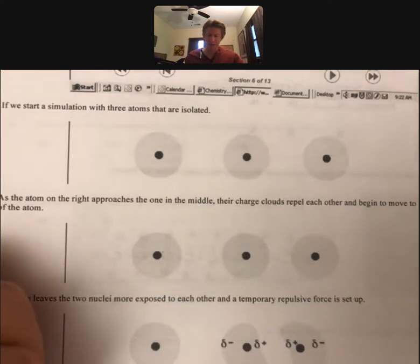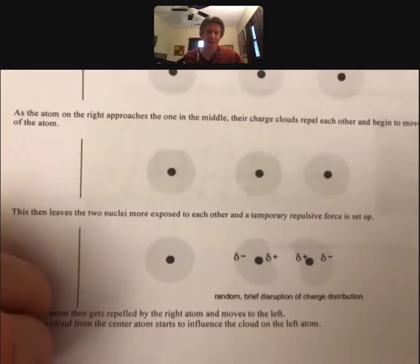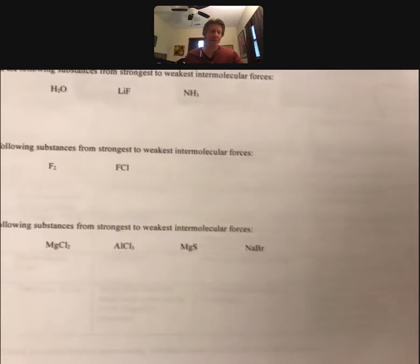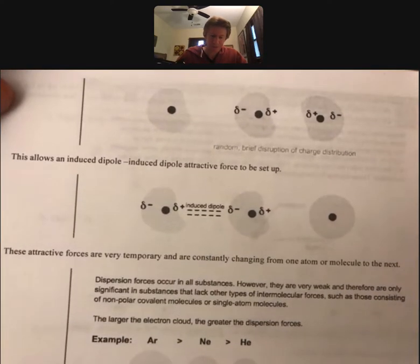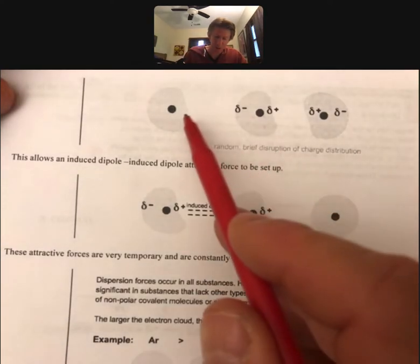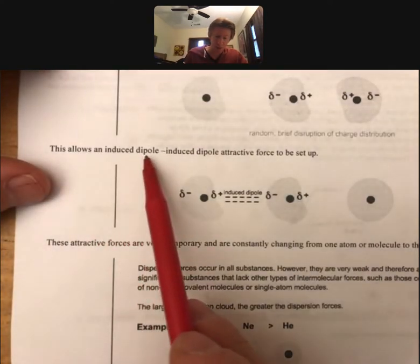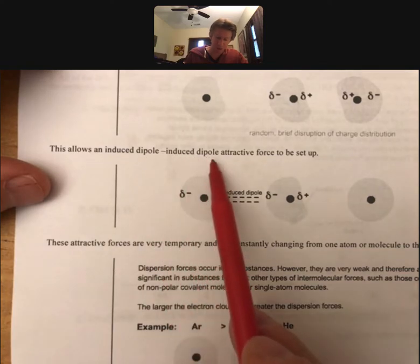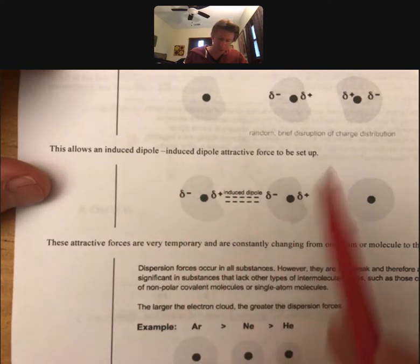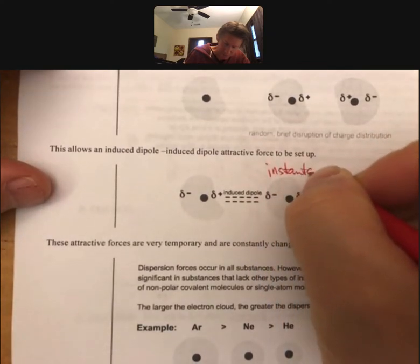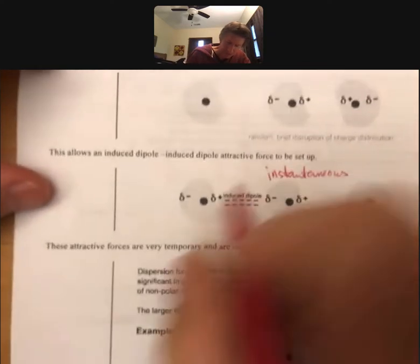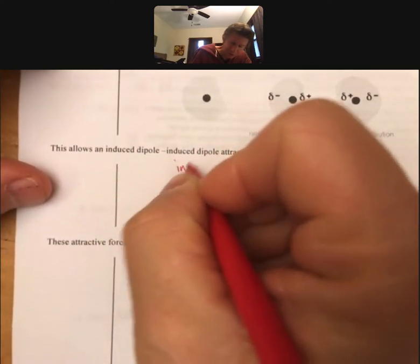And so we're not at the dispersion force yet, it's just taking a while to get there. There we go. It's starting to move over towards this one. This allows an induced dipole-induced dipole over here. I would call this the instantaneous one, dipole, and this one the induced dipole.